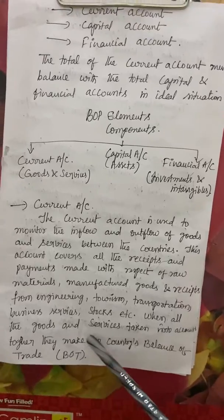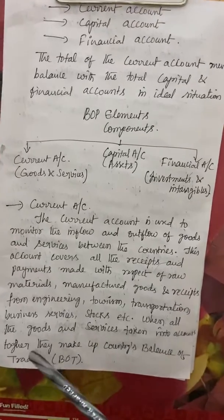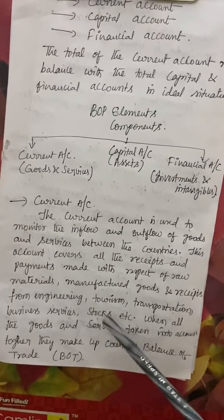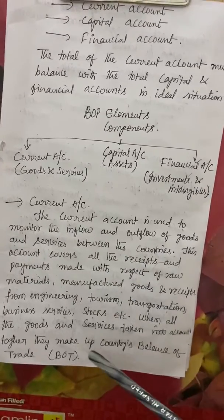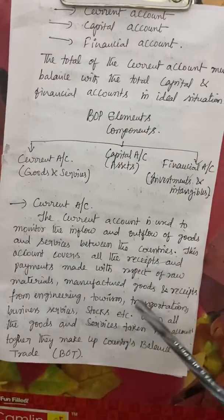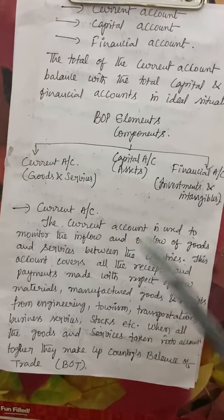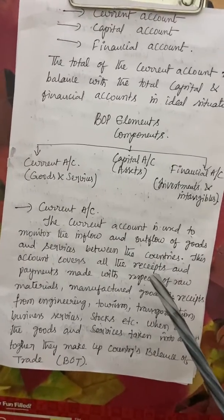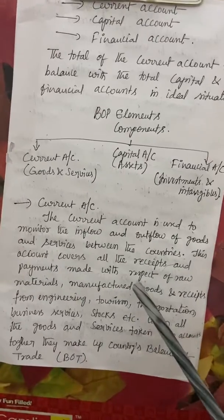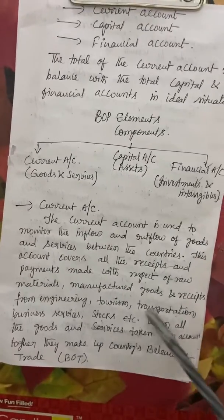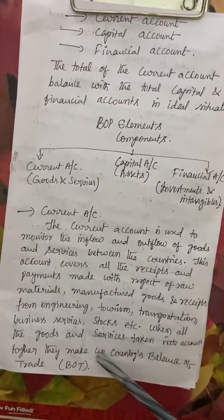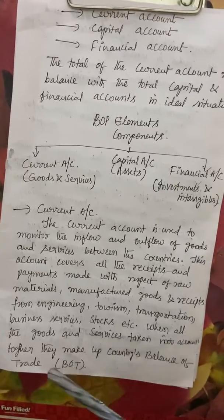When all goods and services are taken into account together, they make up the country's balance of trade. This component is also called the balance of trade, which shows the account of total goods as well as services. Goods are tangibles and services are intangibles, and all these transactions are calculated for a particular year or period of time.